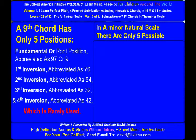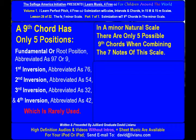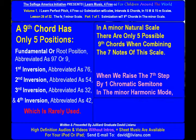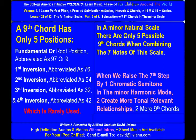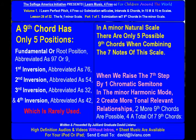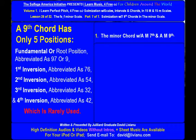In a minor natural scale, there are only five possible ninth chords when combining the seven notes of this scale. When we raise the seventh step by one chromatic semitone in the minor harmonic mode to create more tonal relevant relationships, two more ninth chords are possible for a total of seven ninth chords. The minor chord with a major seventh and a major ninth. The minor chord with a minor seventh and a major ninth.